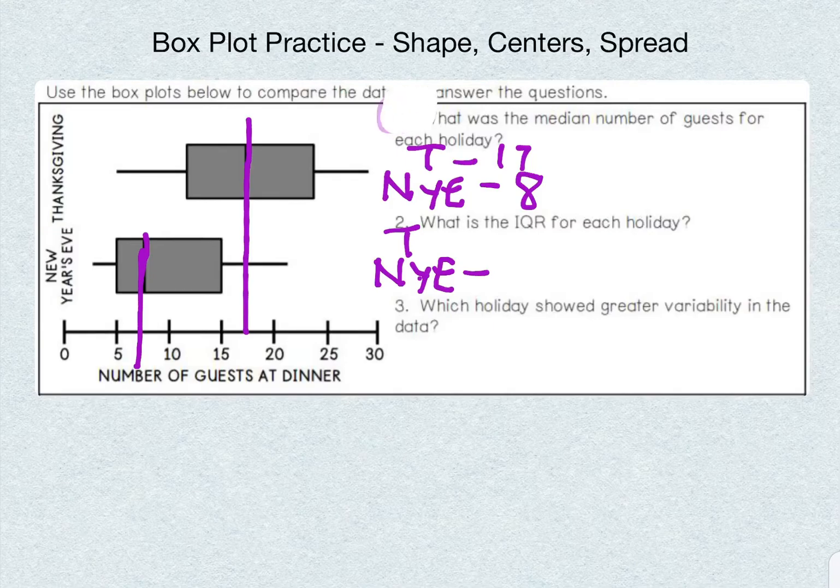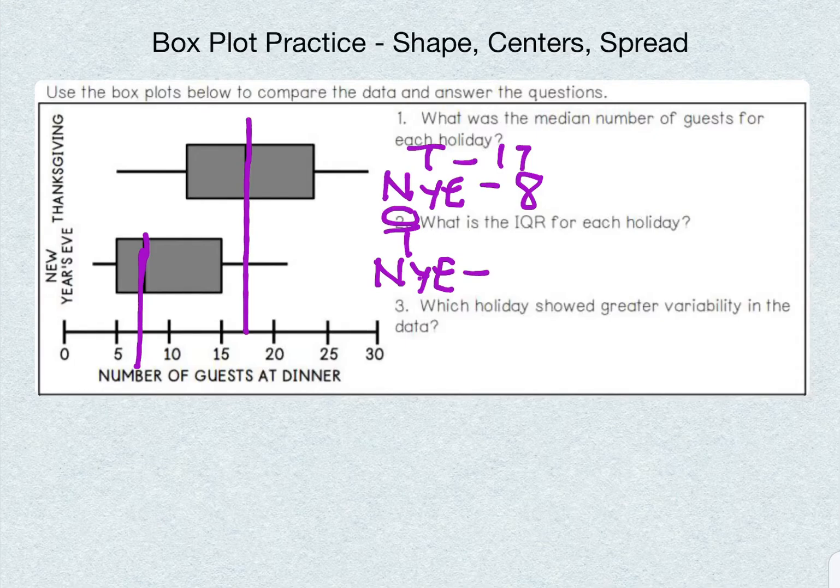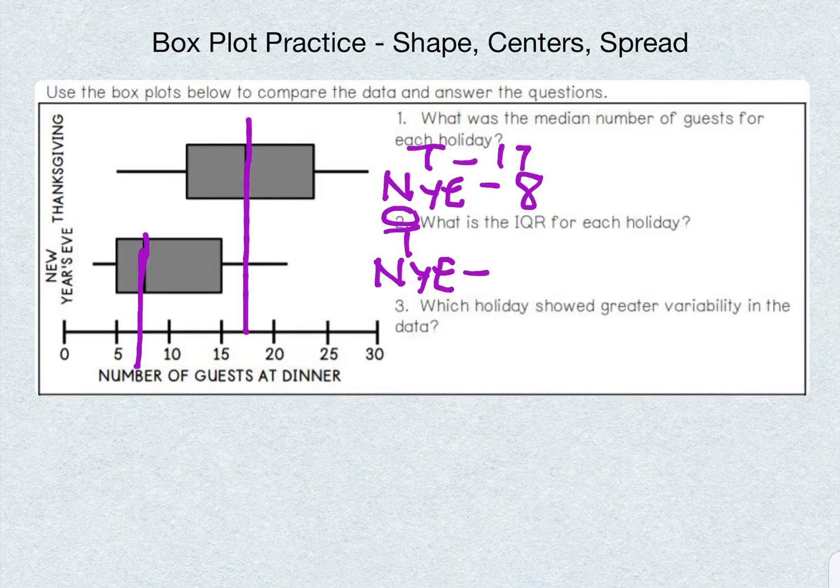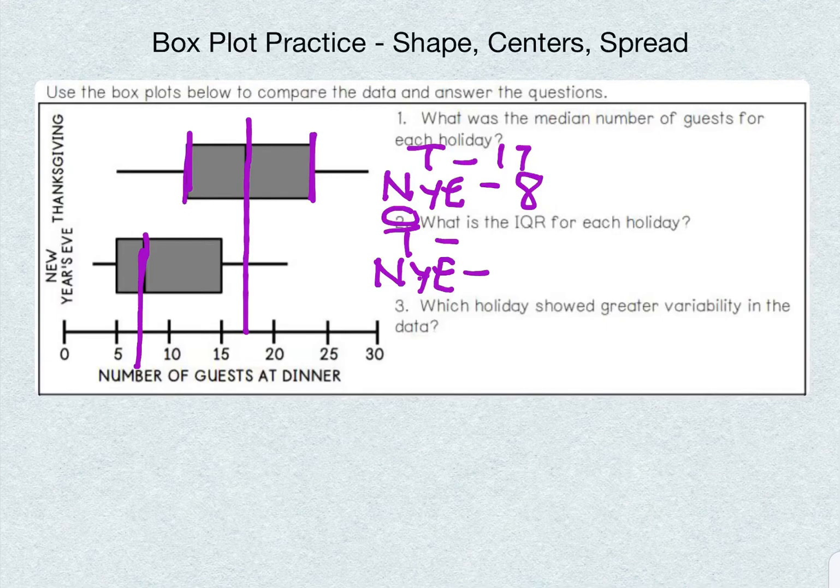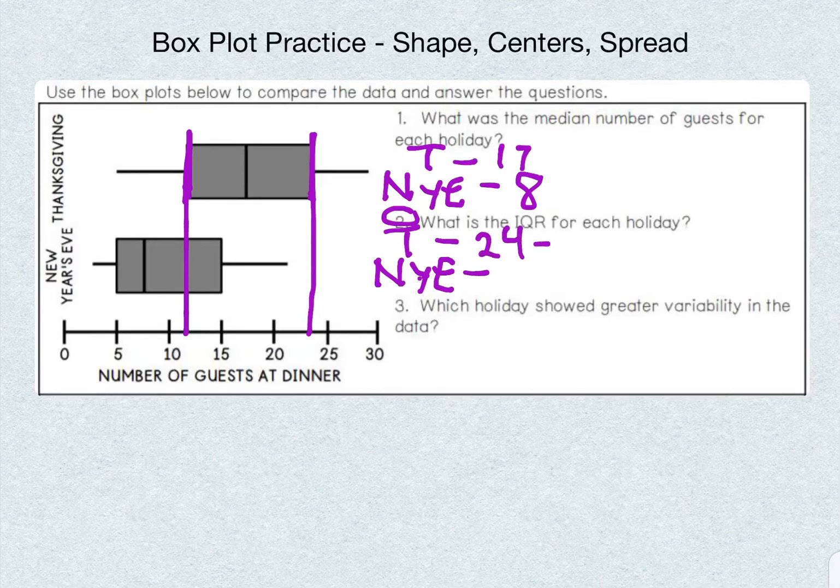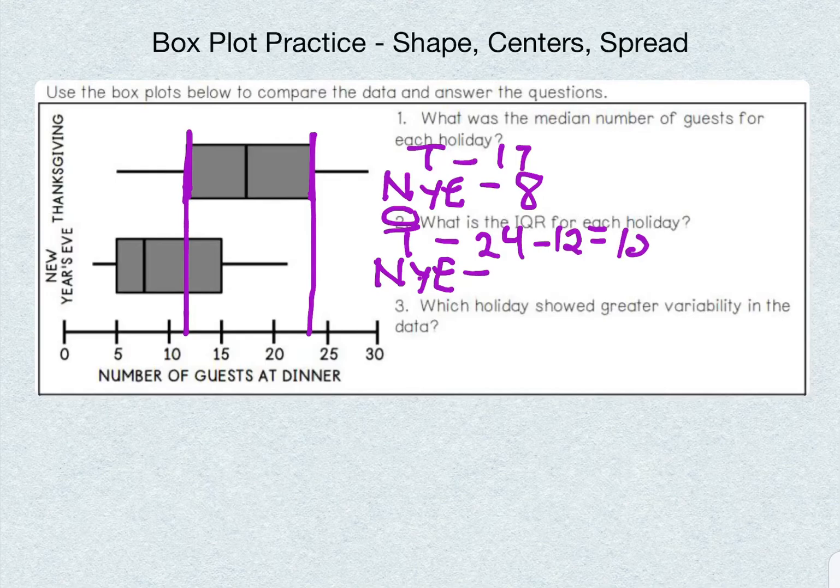Next question is number two, which is what is the IQR, the interquartile range for each holiday. So let's go ahead and start with Thanksgiving. For the interquartile range, we're looking at Q3 and Q1, which are right here. I'm going to go ahead and erase our medians real quick. So we're looking at these two. And whenever we bring this down, it's about 24 minus 12, which gives us an interquartile range of 12.